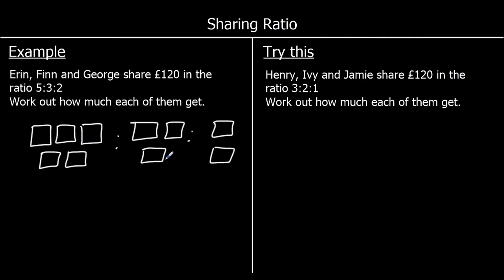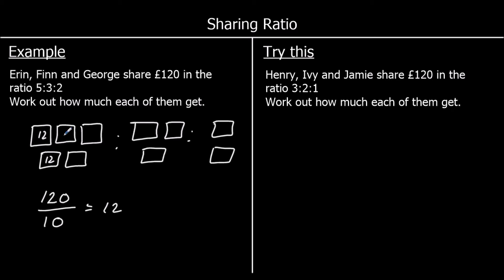Five plus three plus two is ten. There are ten boxes, so we need to split £120 equally between the ten boxes. So 120 divided by ten, and that is 12.